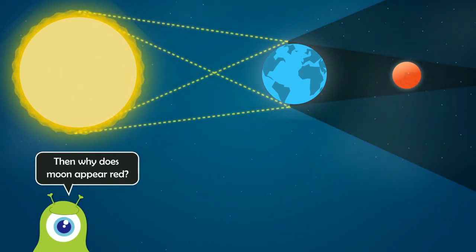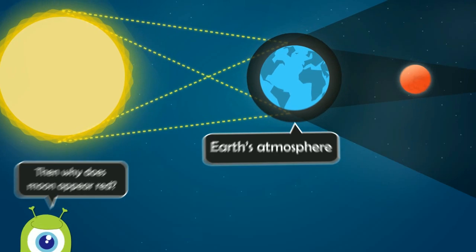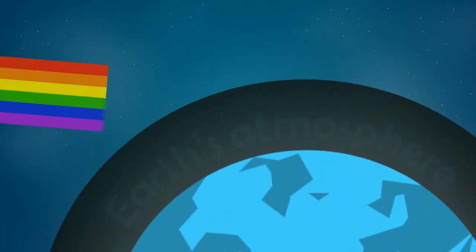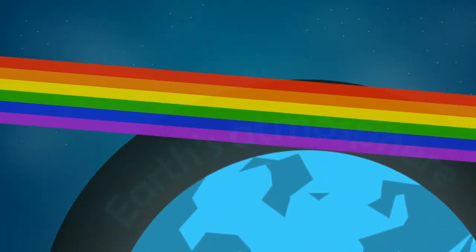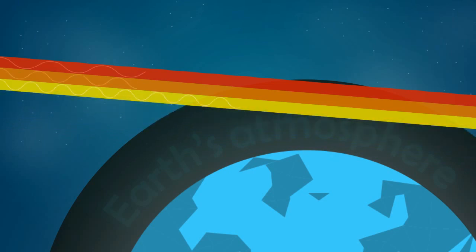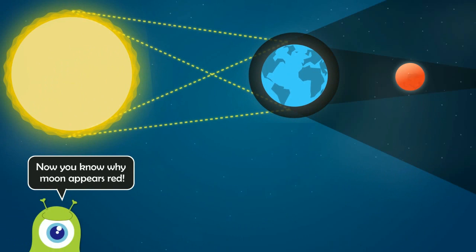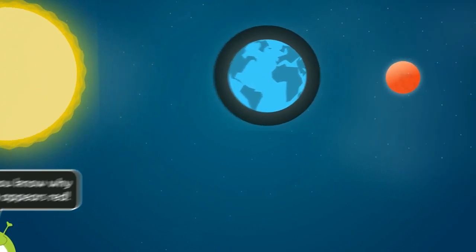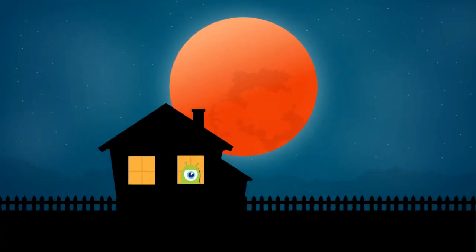But then why does it appear red? We are all forgetting about one major entity here — our Earth's atmosphere. When sunlight reaches Earth, this atmosphere acts as an obstacle in the path to the moon. In the atmosphere, colors of lower wavelength, like blue or green, get scattered and filtered out. Whereas colors of higher wavelength, like red and orange, pass through the Earth's atmosphere and illuminate the moon. This red light causes the moon to appear red during a total lunar eclipse.